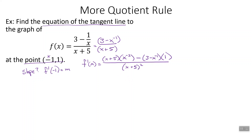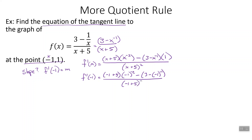We can simplify, but really we just need to find the derivative when x is negative 1, so let's just plug in negative 1 and save ourselves the trouble. We get negative 1 plus 5, times negative 1 raised to the negative 2, minus 3 minus negative 1 to the negative 1st, times 1, all over negative 1 plus 5 squared. That's 4 times 1 — negative 1 to the negative 2 is 1 — so we get 4. Negative 1 to the negative 1st is negative 1; the two negatives cancel, so 3 plus 1 is 4. So we get 4 minus 4 on top, and 4 squared on the bottom: 0 over 16, which is just 0.